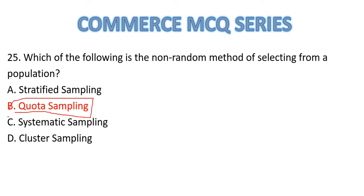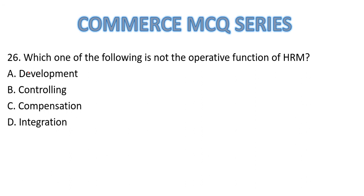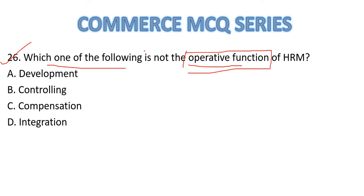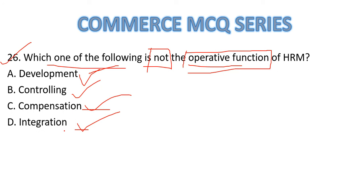Question Number 26: Which one of the following is NOT an operative function of HRM? Options: A — development, B — controlling, C — compensation, D — integration. Development, compensation, and integration are operative functions. Planning, controlling, organizing, and coordinating are managerial functions. So Option B, controlling, is the correct answer.